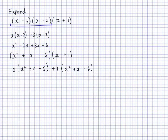Now if I expand this I'll get x cubed plus x squared take away 6x — x multiplies to each of those three things separately. Then 1 times x squared is just x squared, 1 times x is just x, and 1 times negative 6 is negative 6. Now I need to simplify. I have only one x cubed term, so I just write x cubed. I have x squared and x squared here, which go together to make 2x squared.